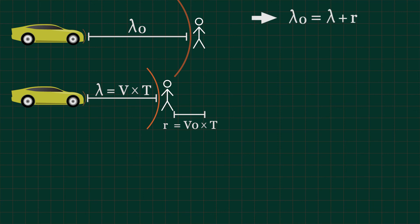Here we have lambda 0 is equal to lambda plus r. Then we will write lambda 0 as the speed of sound wave times oscillation period t0. Lambda as the speed of sound wave times oscillation period t. Distance r is equal to the speed v0 times oscillation period t. Remember, because t is equal to 1 over f, we will get this new form.